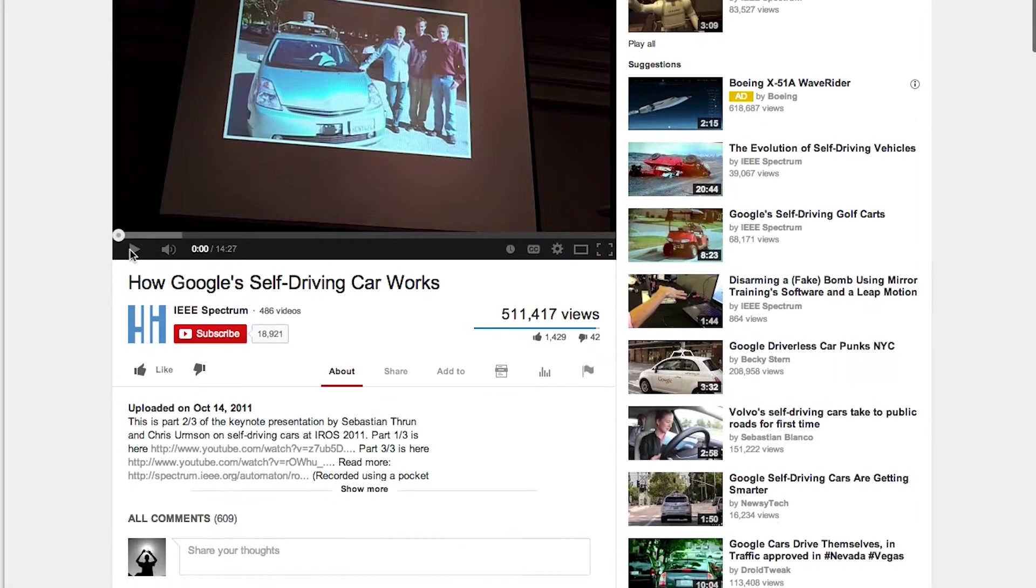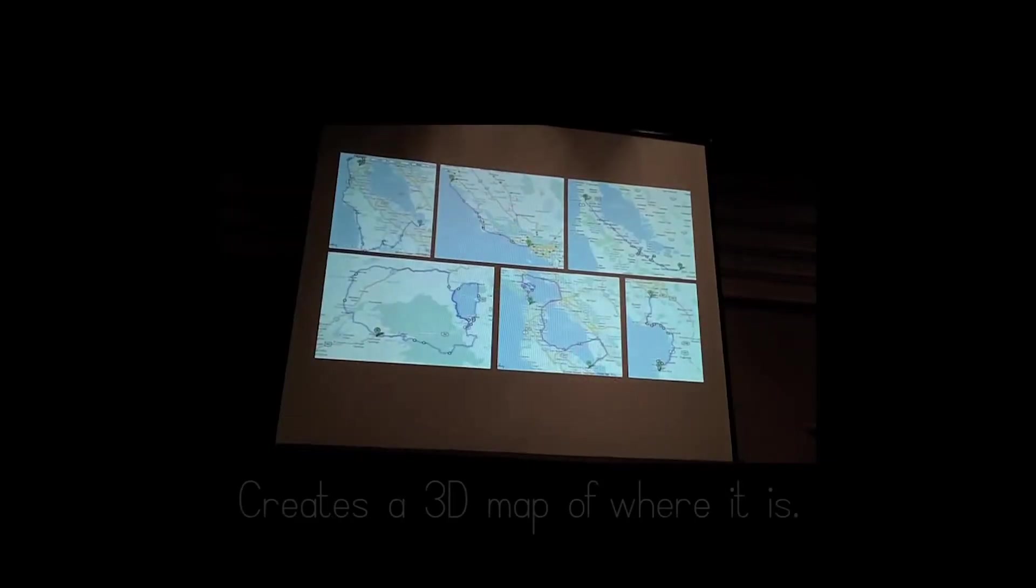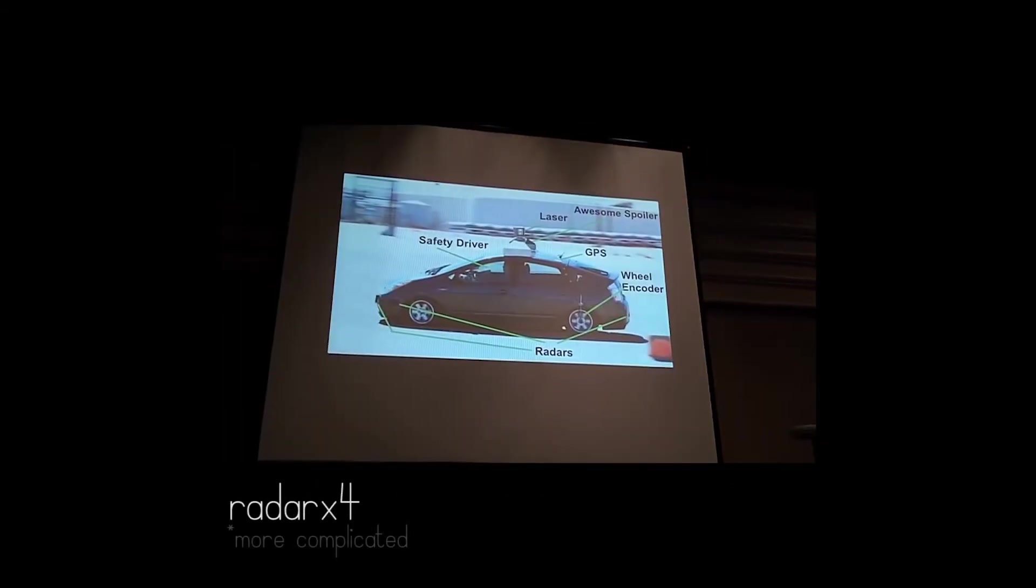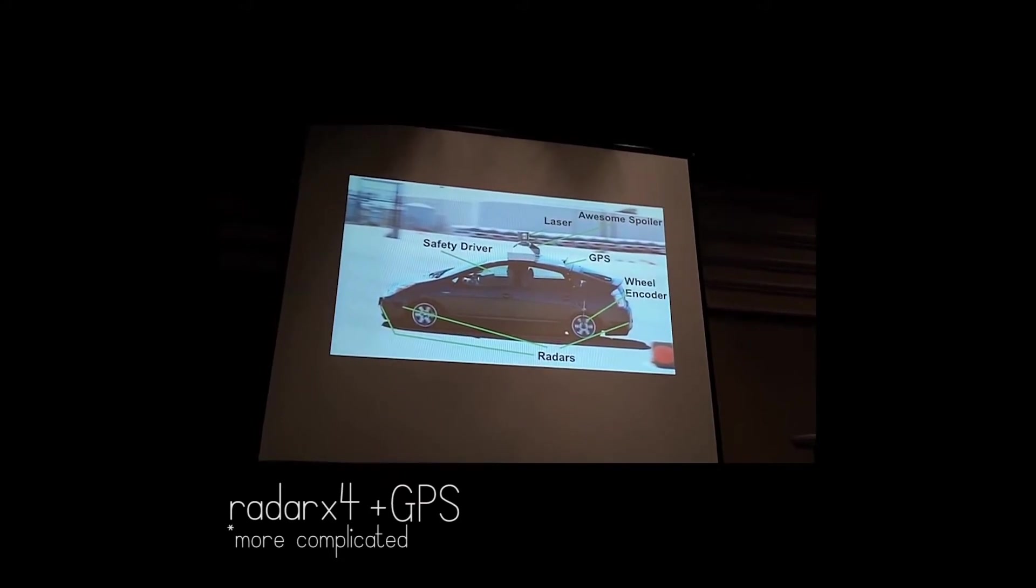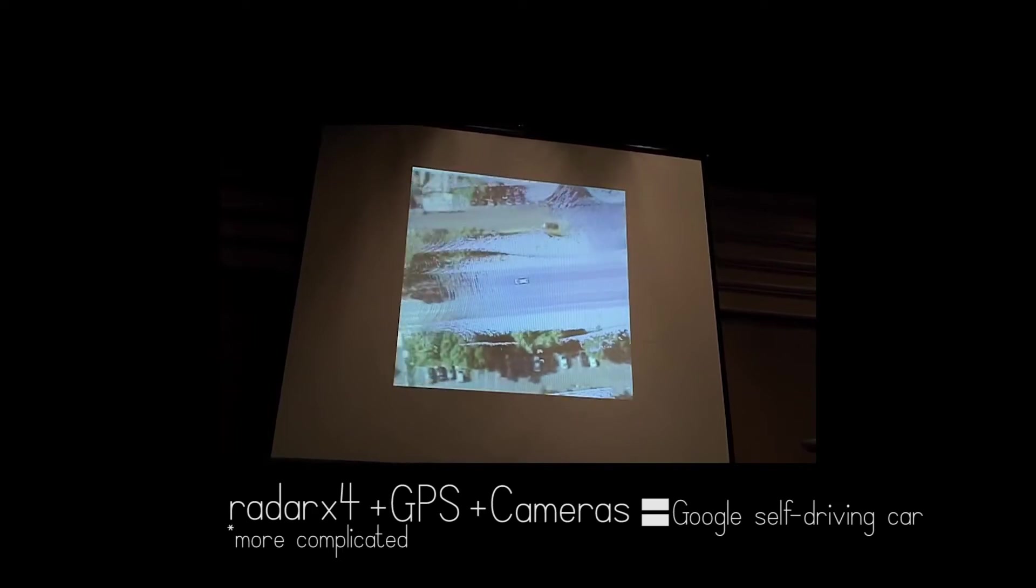But how does it work? It uses a laser rangefinder as well as maps of the world to create a 3D map of the environment it's in. There are four radars on the back and front bumpers, a highly sophisticated GPS system, and cameras that allow the car to see.